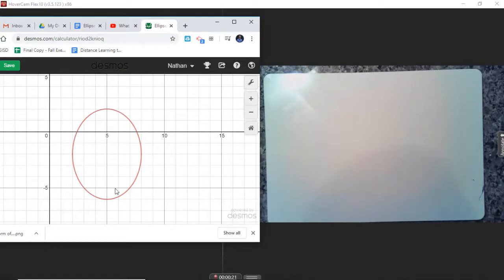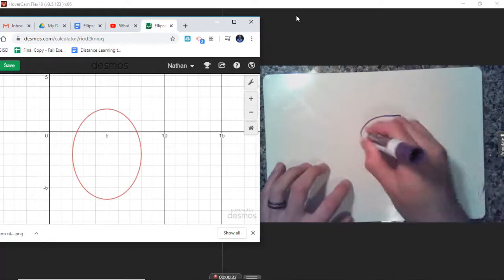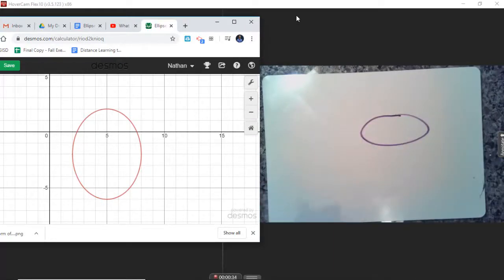Now, if you notice that this video has an ellipse in our example that is vertical, right? This is like a vertical ellipse. The other one that we were working with was a horizontal ellipse.